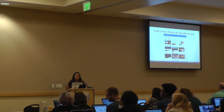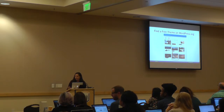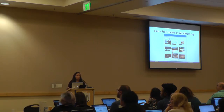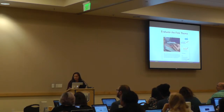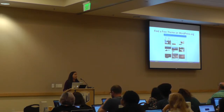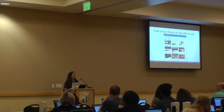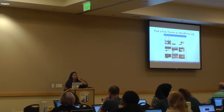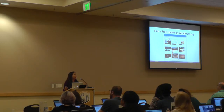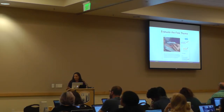You go to wordpress.org and browse around themes, or maybe somebody's recommended a theme. The theme we're going to use today is the Sydney theme. You don't have to use it — it's just the example for today. But this is the thought process you want to go through when looking for a theme. So you find the theme you want, and here's how you want to start evaluating it.